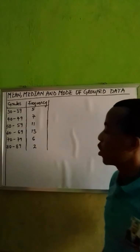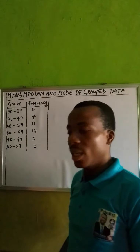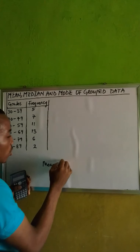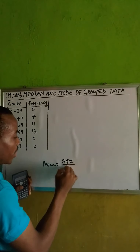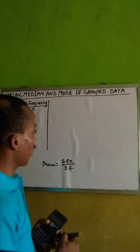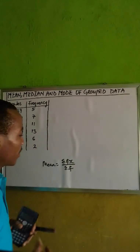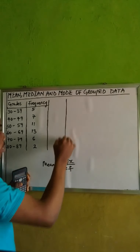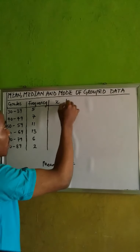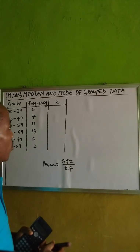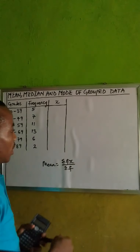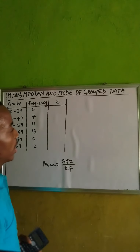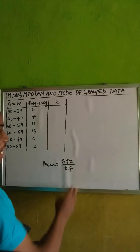Starting with the first question: how do we find the mean of this grouped data? The mean of grouped data from the formula is: mean equals the summation of fx divided by the sum of f. At this junction we've been given the frequency, but we need to get the x values before we can proceed. We simply add up the class boundaries and divide by 2 to get the x values, then create another column for fx, get the sum of the frequency and divide — that gives us the mean.